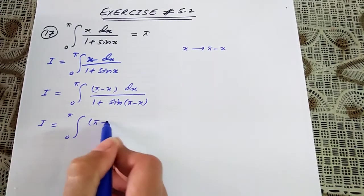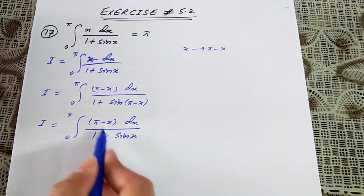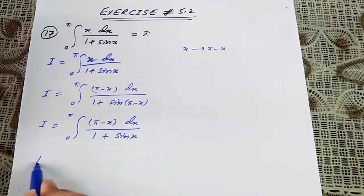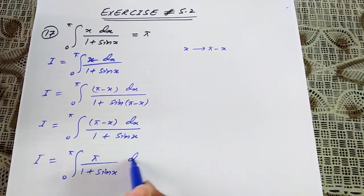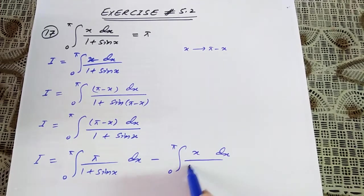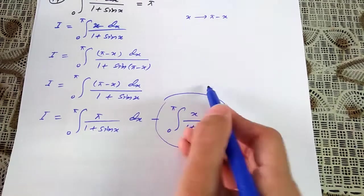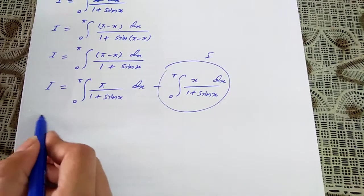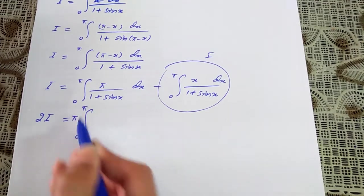This becomes i equals the integral from 0 to π of π minus x dx over 1 plus sin of x. I can split it into two parts because there are two functions in the numerator separated by the subtraction sign. So i equals the integral from 0 to π of π over 1 plus sin of x dx, minus the integral from 0 to π of x dx over 1 plus sin of x. This second integral is the same as i, so replacing it gives 2i.